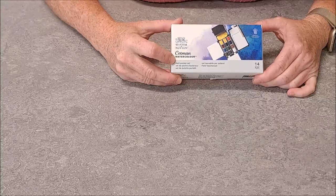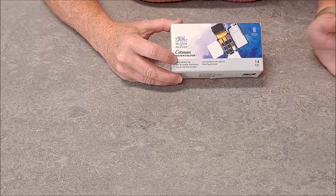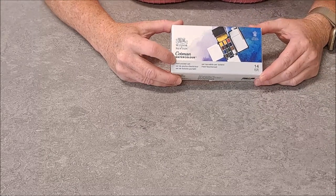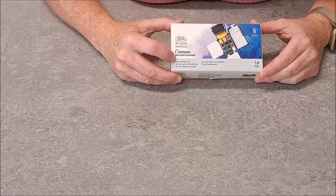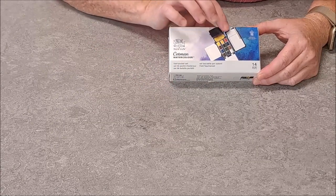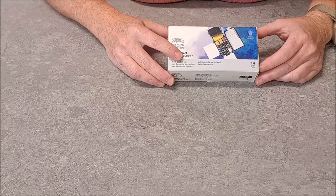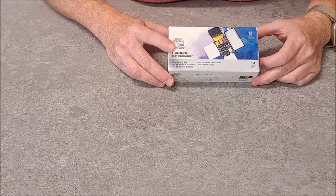This is the Winsor Newton Cotman field pocket set. The first one was just a field set. This one has the addition of the word pocket in the name of it. While I'm taking this out of the box I will show you the palette of 12 colors that comes with it. It's the exact same 12 colors that are in the field set. The field set has two additional colors.